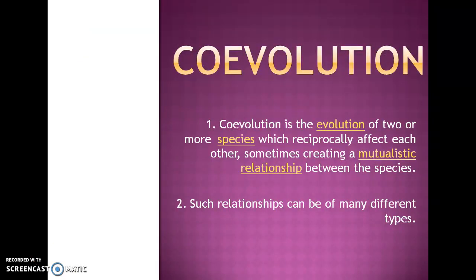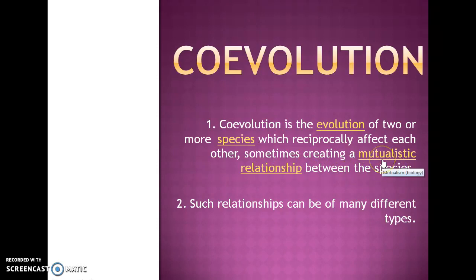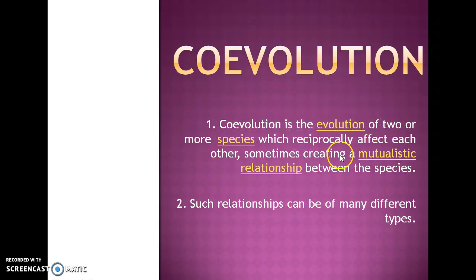Coevolution involves an interaction between two species. Coevolution is the evolution of two or more species which reciprocally affect each other, sometimes creating a mutualistic relationship between the species. They do not always create a mutualistic relationship — sometimes it may be antagonistic, and I will give examples of that later.